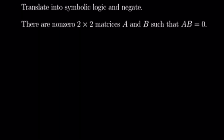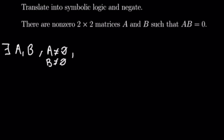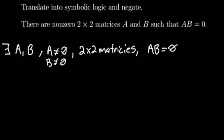This one says: there are non-zero two by two matrices A and B such that A times B equals zero. So let's translate this. We'll have: there exists A and B with A not equal to zero and B not equal to zero, and they are two by two matrices, such that A times B equals zero.